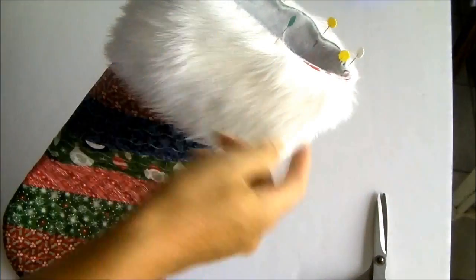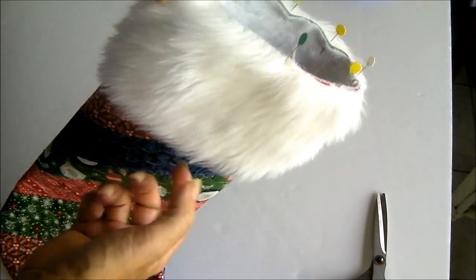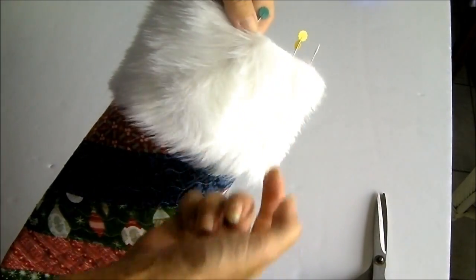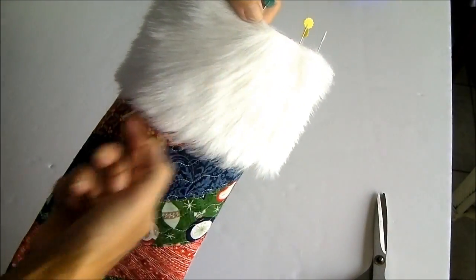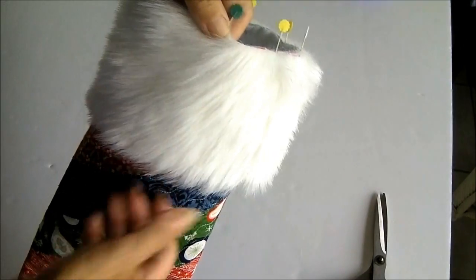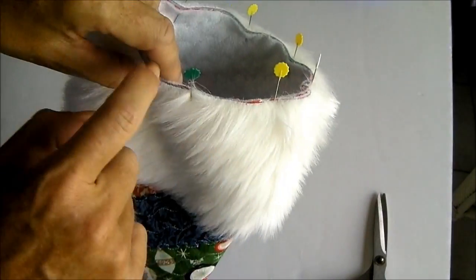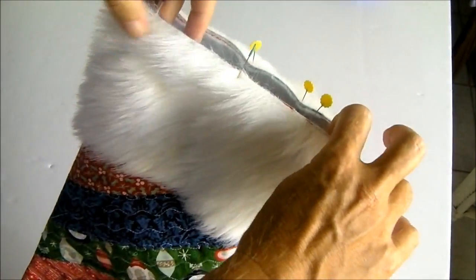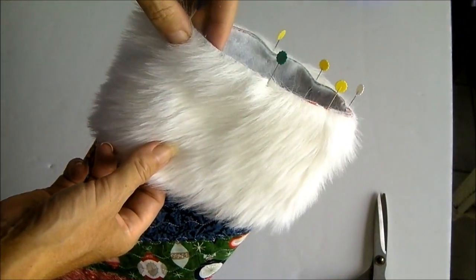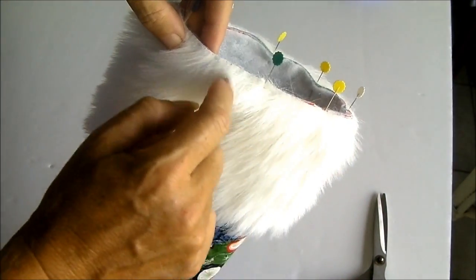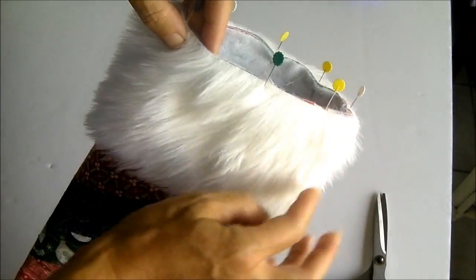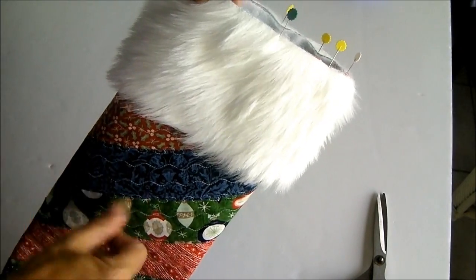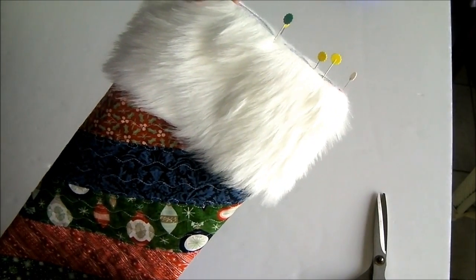Put the fur on around the top. Now if your fur has a nap which means that the fur sits better in one direction than in the other it's better to have the nap going downwards that's going to look a bit nicer. And you'll line up the top of the fur with the top of the quilted edge of the stocking and pin and then just baste it in place. You can either just go around the top with a narrow seam with your machine or just quickly put a running stitch around with a needle and thread just to hold the fur in place.